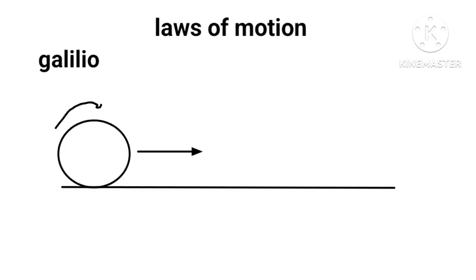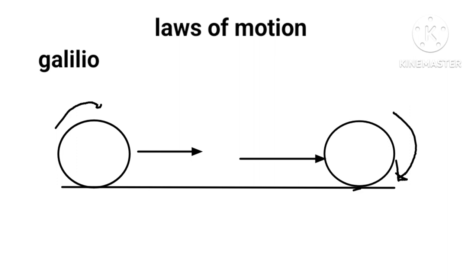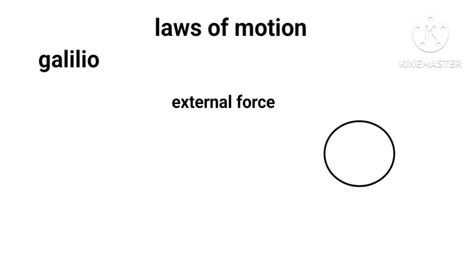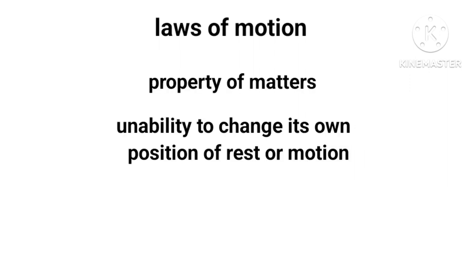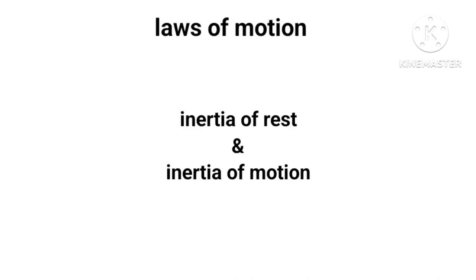Galileo said a body at rest will remain at rest, and if in motion will remain in motion, until an external force is required to either move it or stop it. He described inertia as a property of matter, defined as the ability to change its own position of rest or motion — called inertia of rest and inertia of motion.